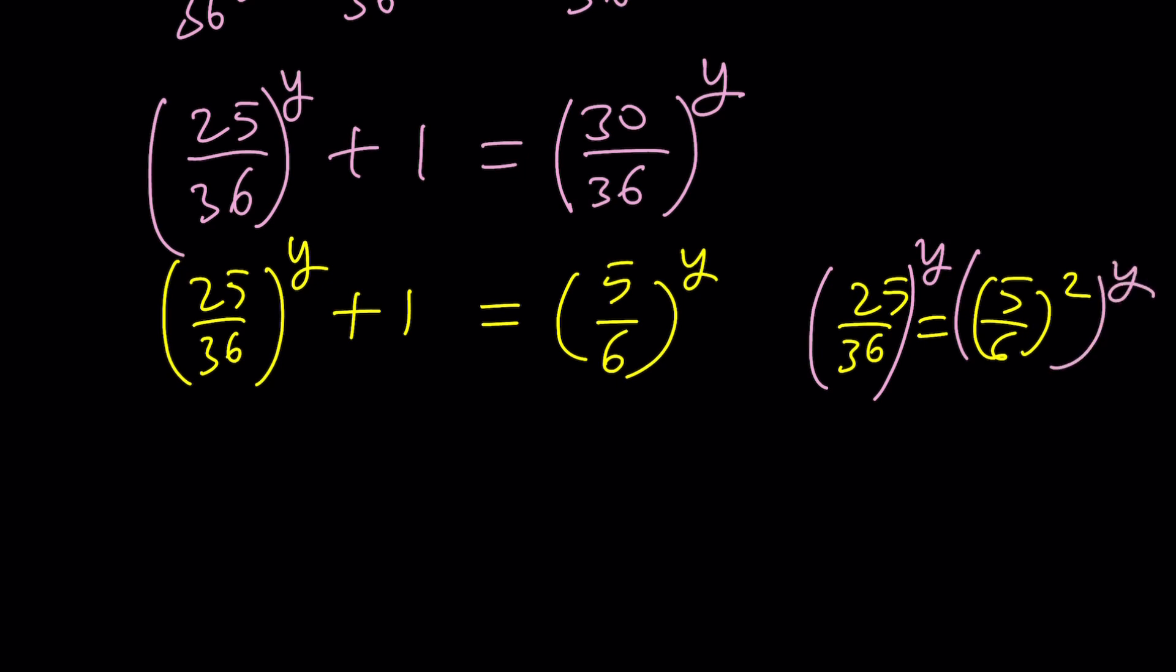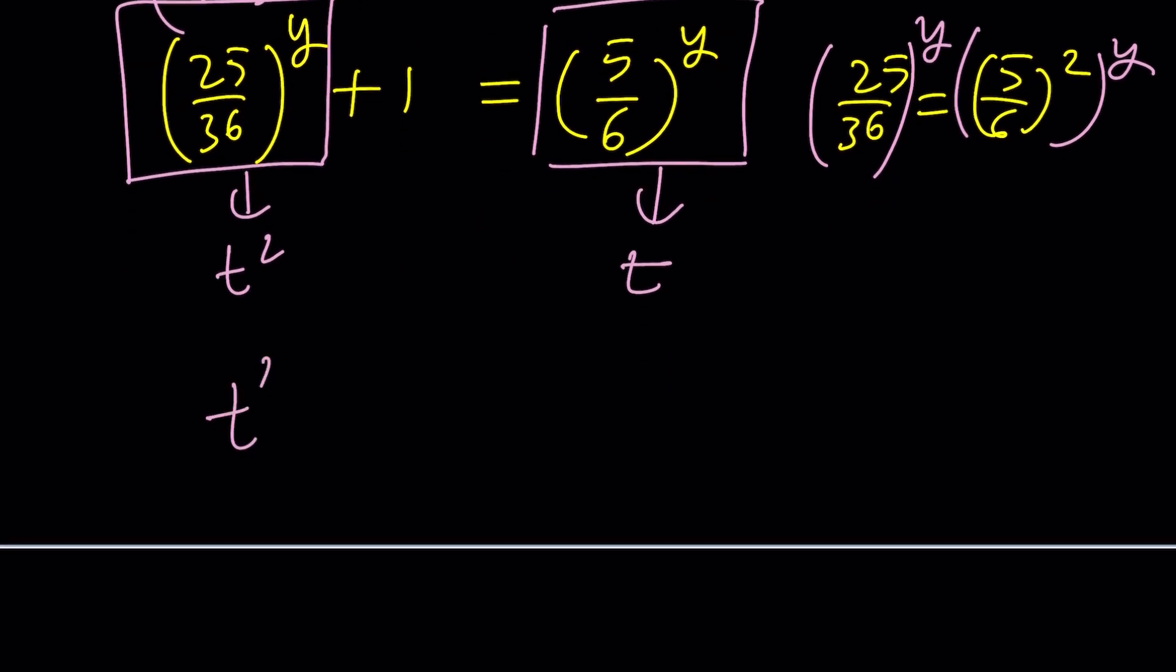If you raise both sides to the power y, you get something super duper special. You get 5 over 6 squared to the power y. In other words, if this is t, another substitution, this will be t squared. Beautiful. Now we get a quadratic equation. You see the transformation? We go from some power equation, which is pretty non-standard and not solvable as is, to an exponential. And from the exponential, we go to a quadratic. How nice is that?